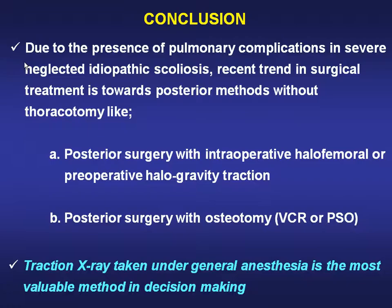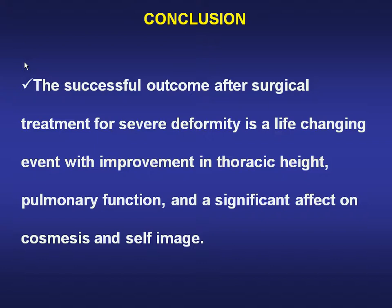Due to the presence of pulmonary complications in severe neglected idiopathic scoliosis, the recent trend in surgical treatment is toward posterior methods without thoracotomy — such as posterior surgery with intraoperative halo-femoral or preoperative halo-gravity traction, and posterior surgery with osteotomy like pedicle subtraction or PVCR. Traction x-ray under general anesthesia is the most valuable method in decision making. The outcome after surgical treatment for severe deformity is a life-changing event, with improvement in thoracic height, pulmonary function, and significant effect on cosmesis and self-image.